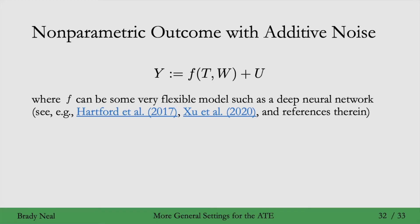There are a bunch of different papers where they use different kinds of F here. One is where you use deep neural networks — you can check out these references. Other common approaches are to use kernel methods for F. The general idea is that once you add this additive noise assumption and choose your model class F, which could be considered non-parametric, you get identification of the regular average treatment effect, not the local average treatment effect.